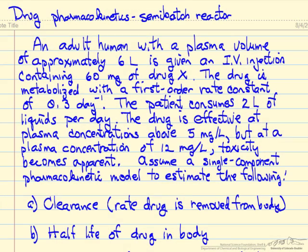In this example, we will look at metabolism of a drug. In this case, we have a human where the plasma volume is 6 liters, and they're given an IV injection.